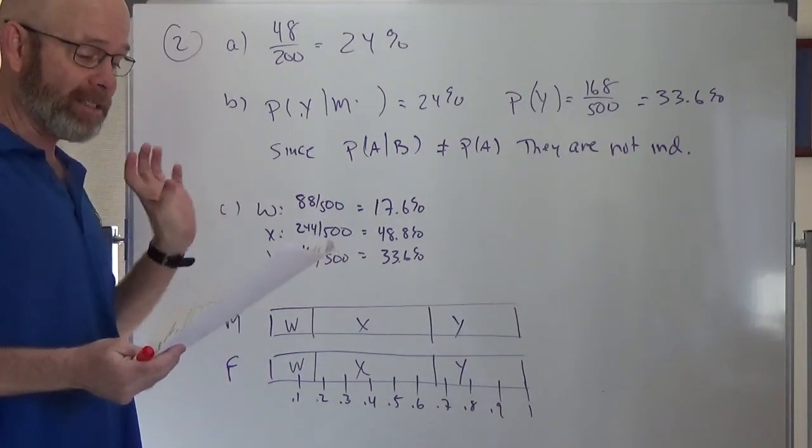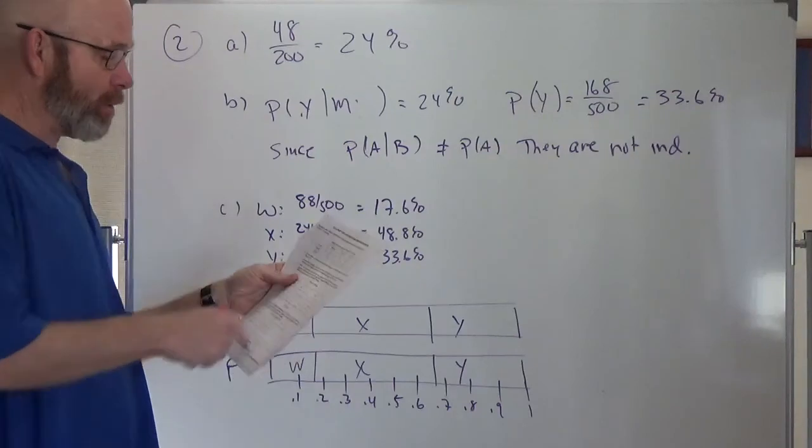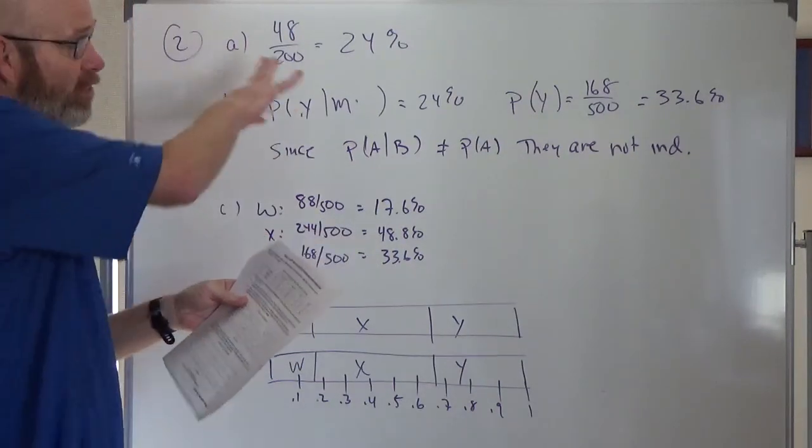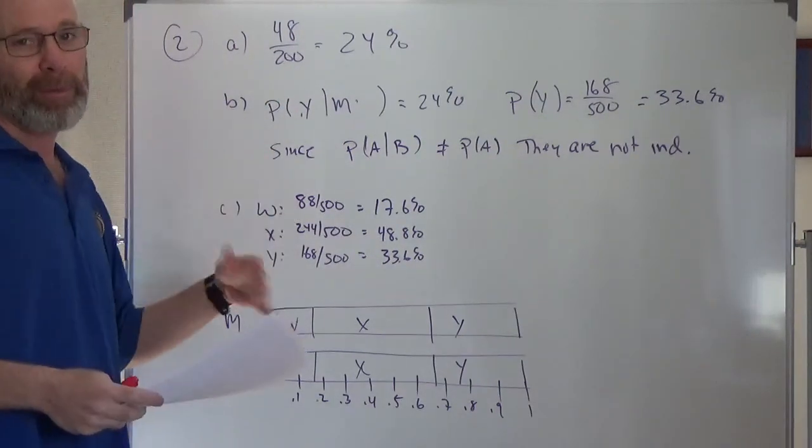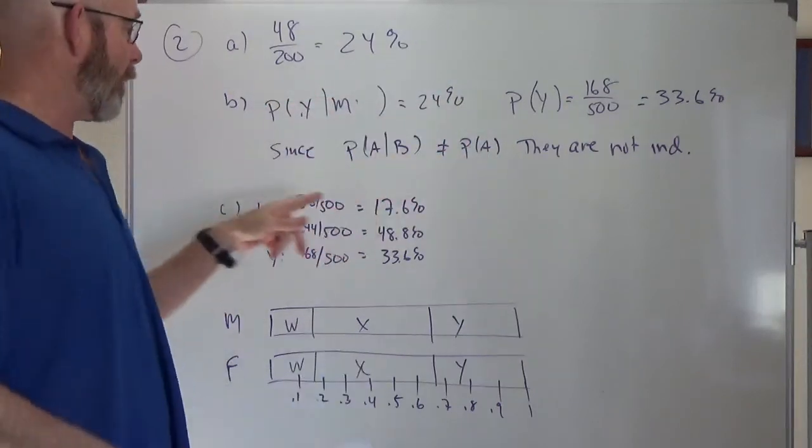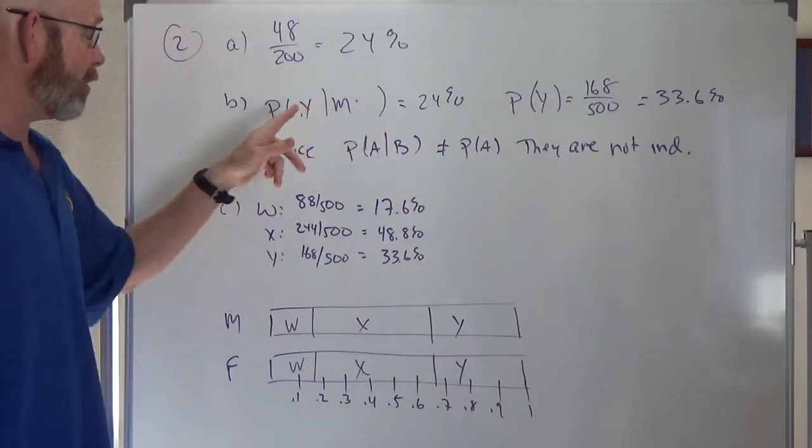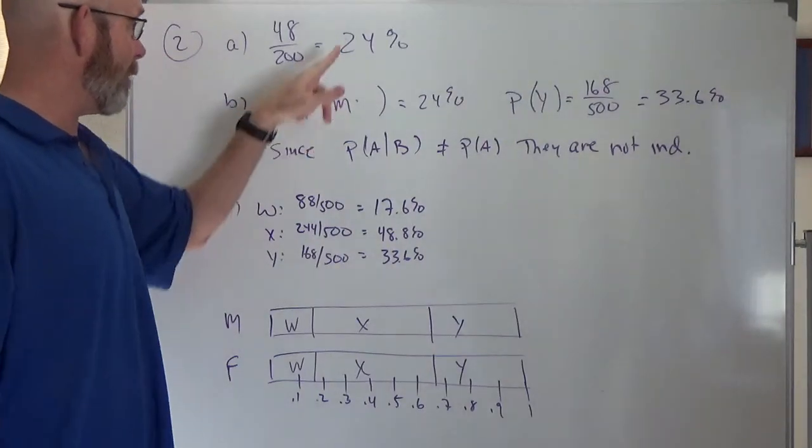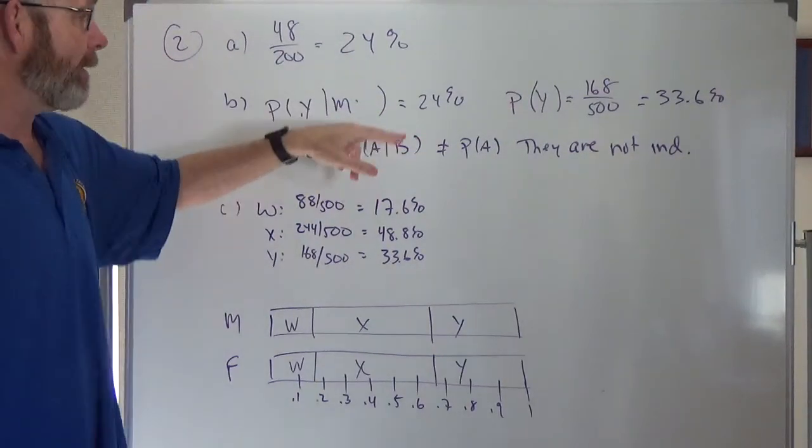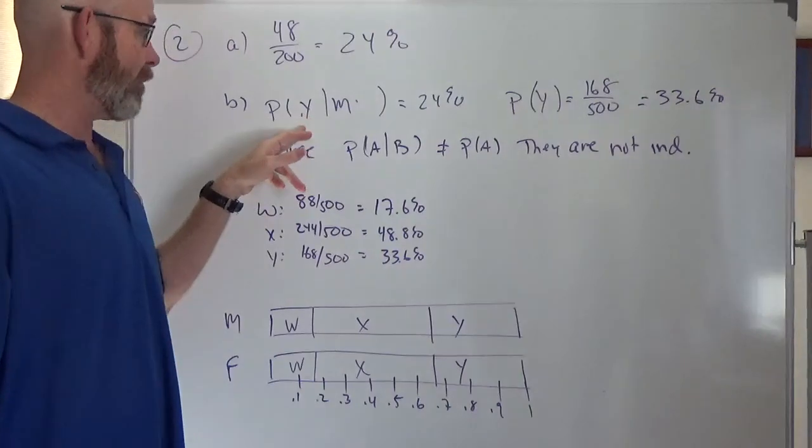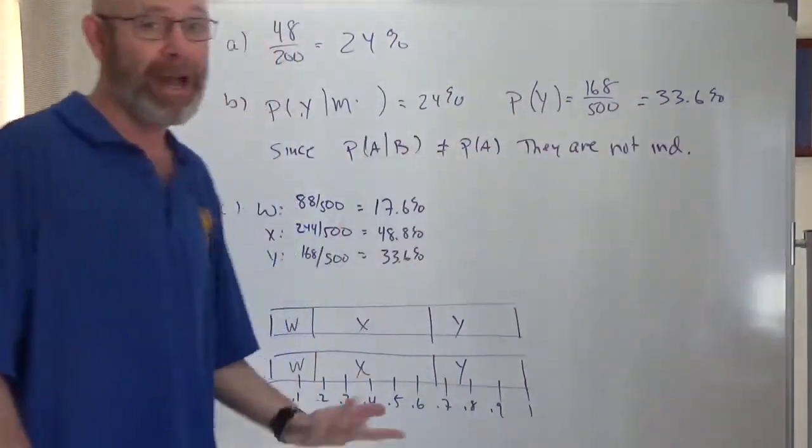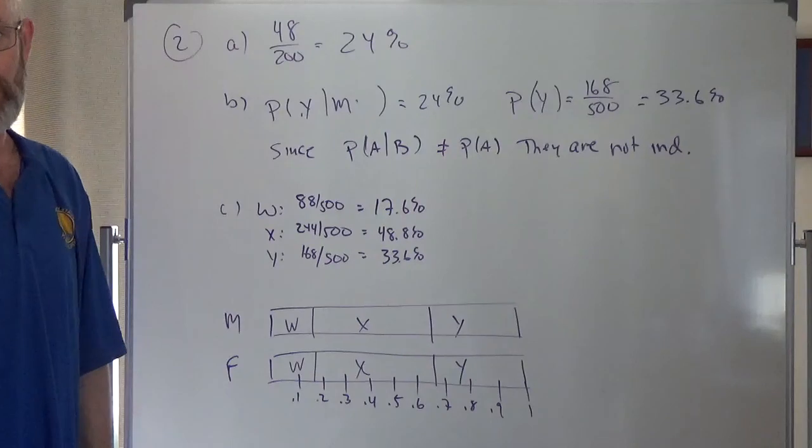Normally we would run a chi-square test, and you can do that normally. But notice in this problem they said using the table above, right, using the probability. So they want us back to our old way, which is probability of A given B equals probability of A. So the probability of party Y given male is what we just did is 24%. I found the probability of just Y, which is 33.6%. Not equal. Therefore not independent.